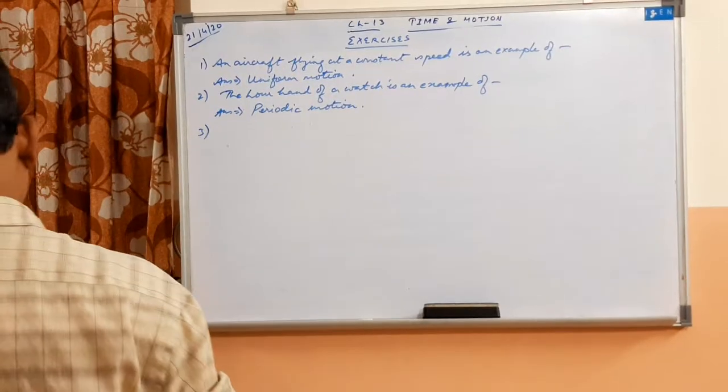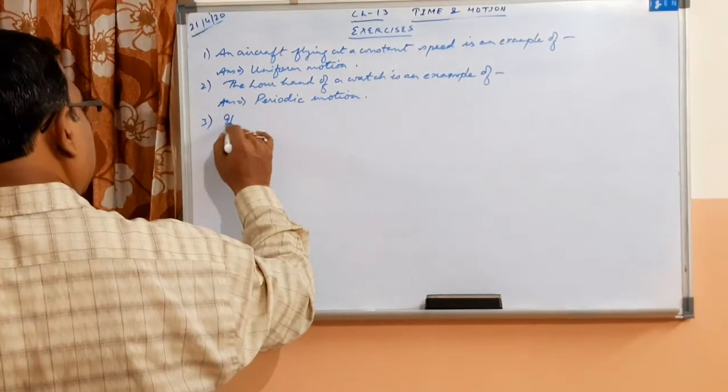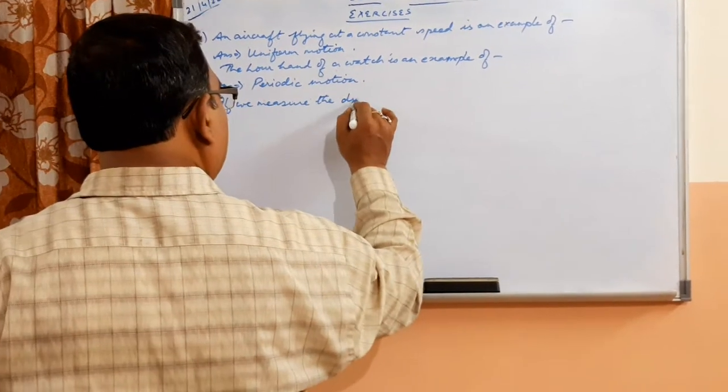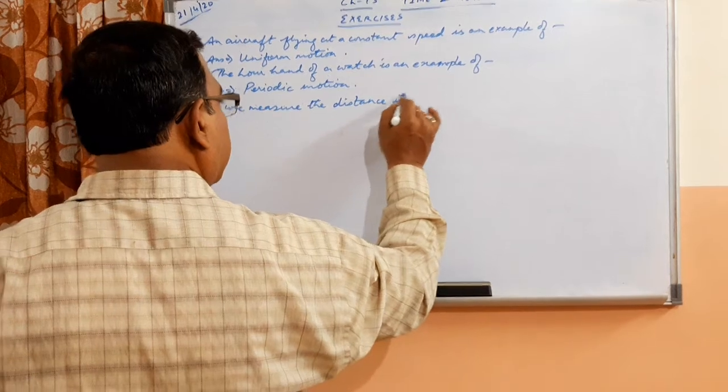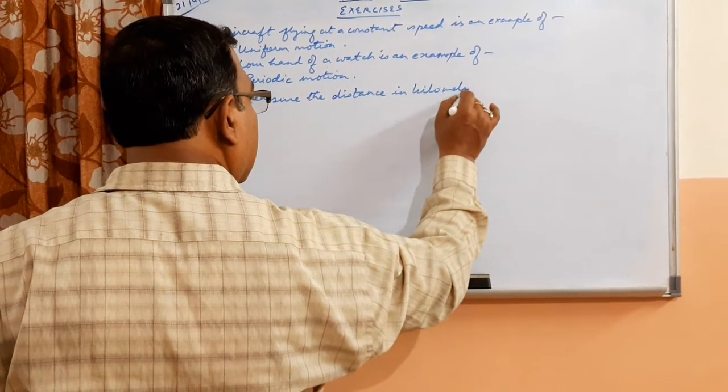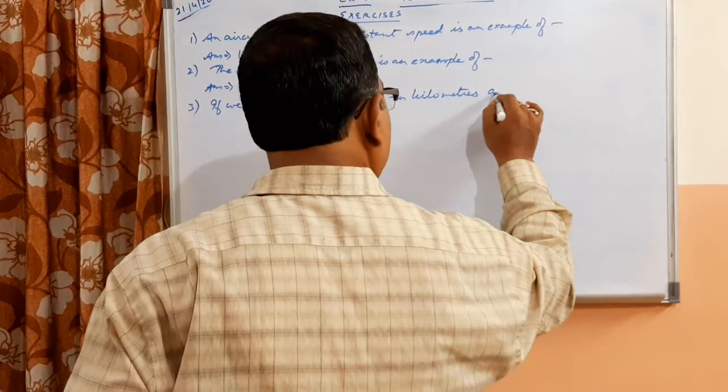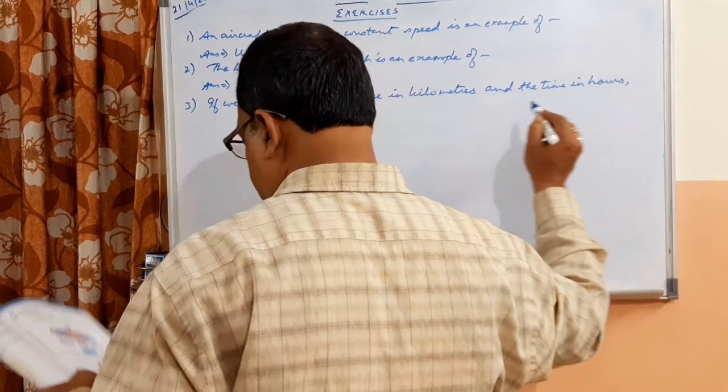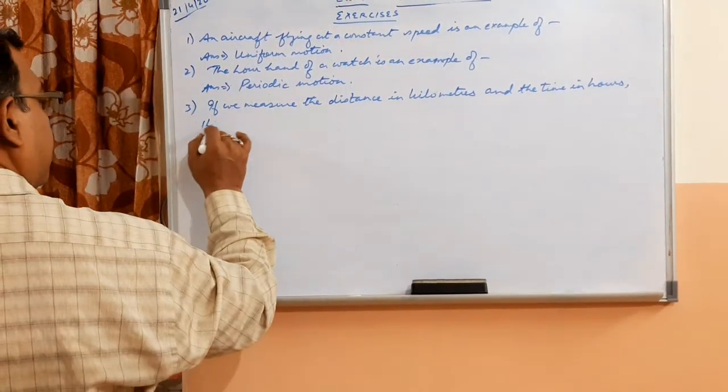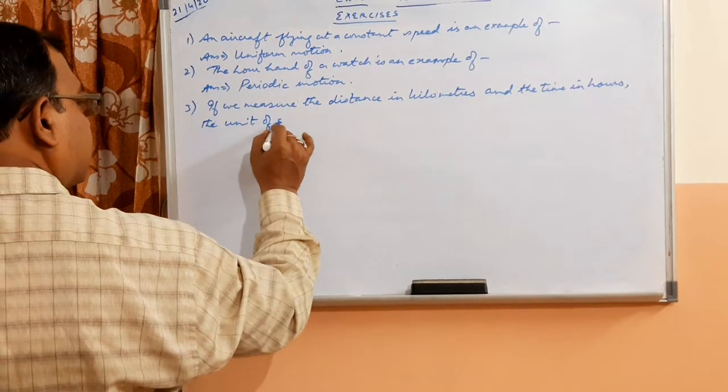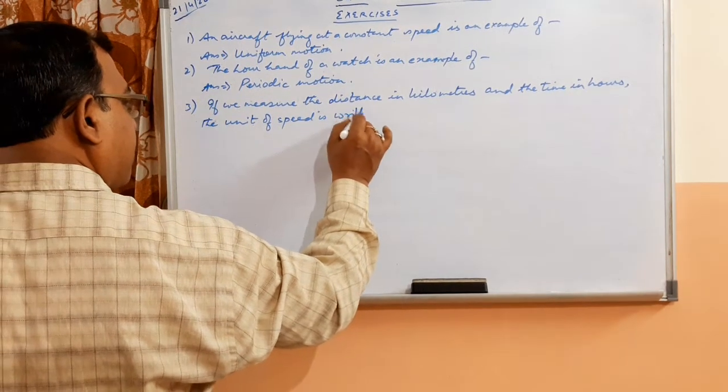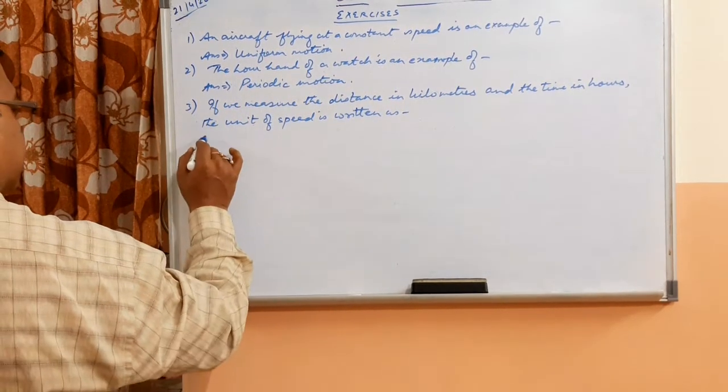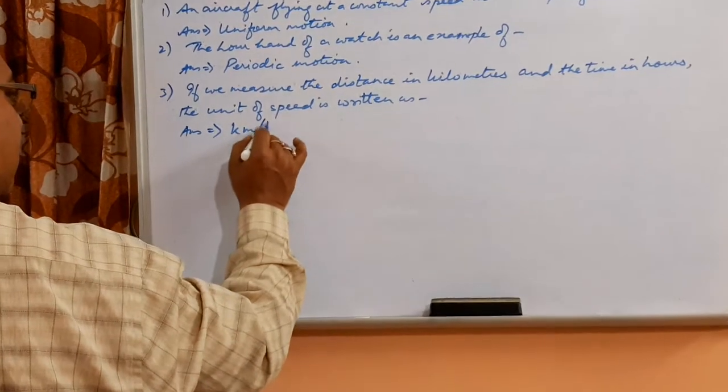Number 3: If we measure the distance in kilometers and the time in hours, the unit of speed is written as... Answer: kilometer per hour.